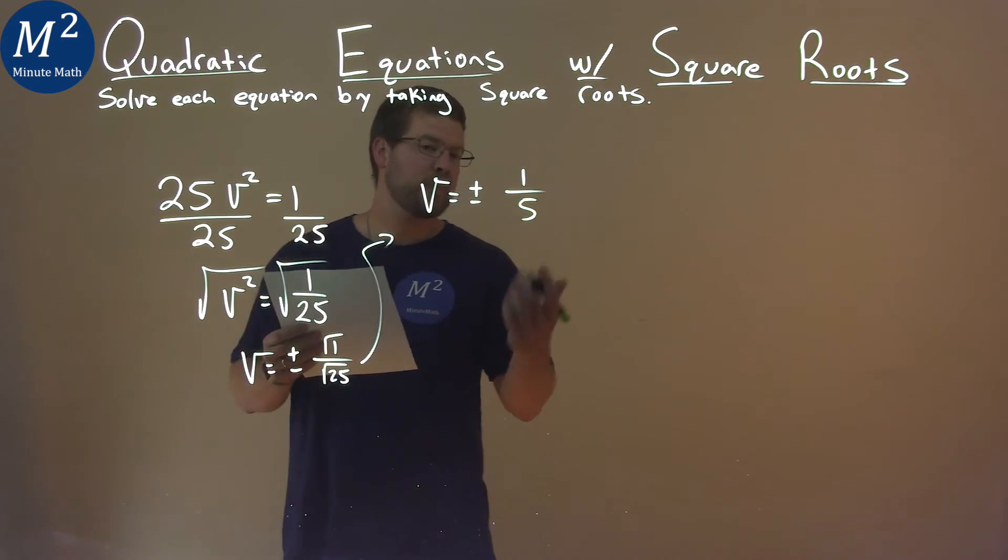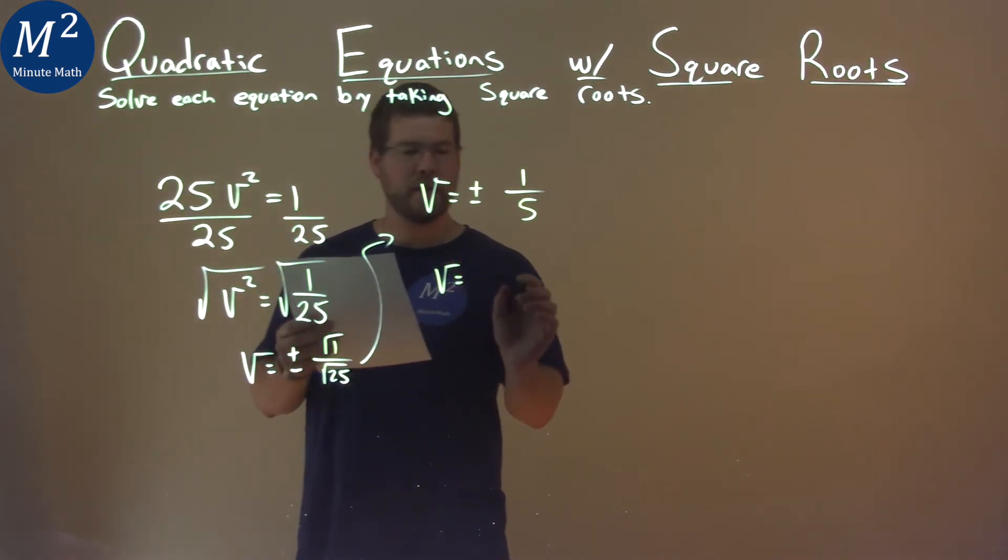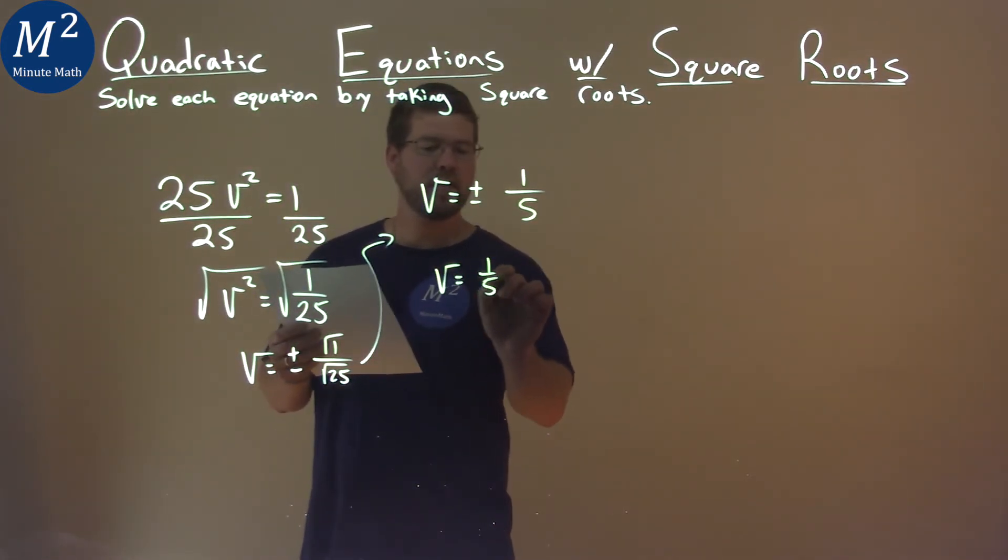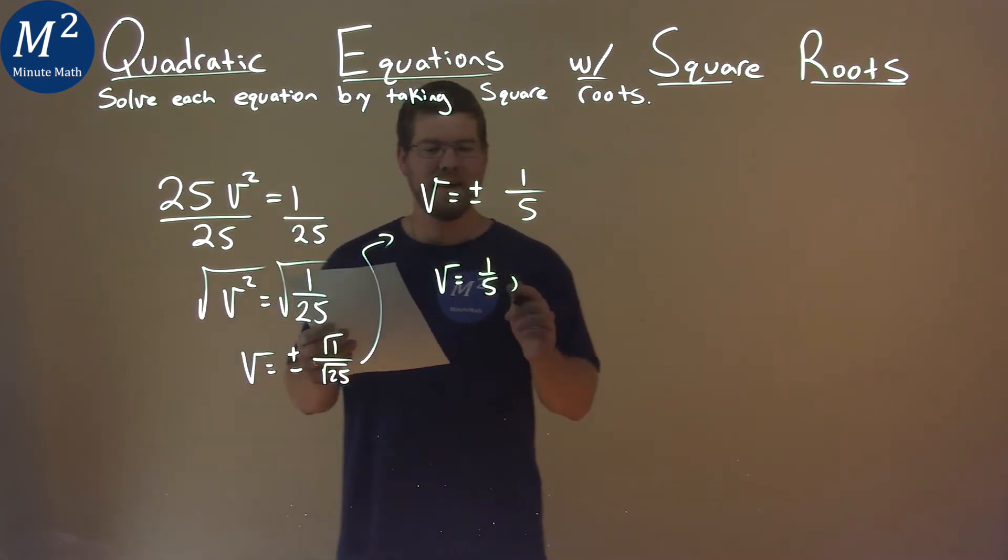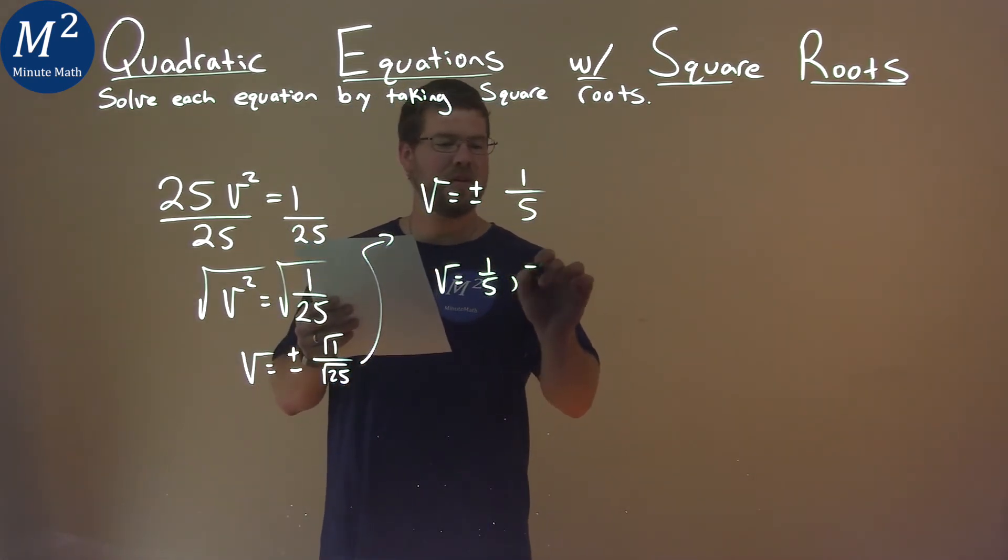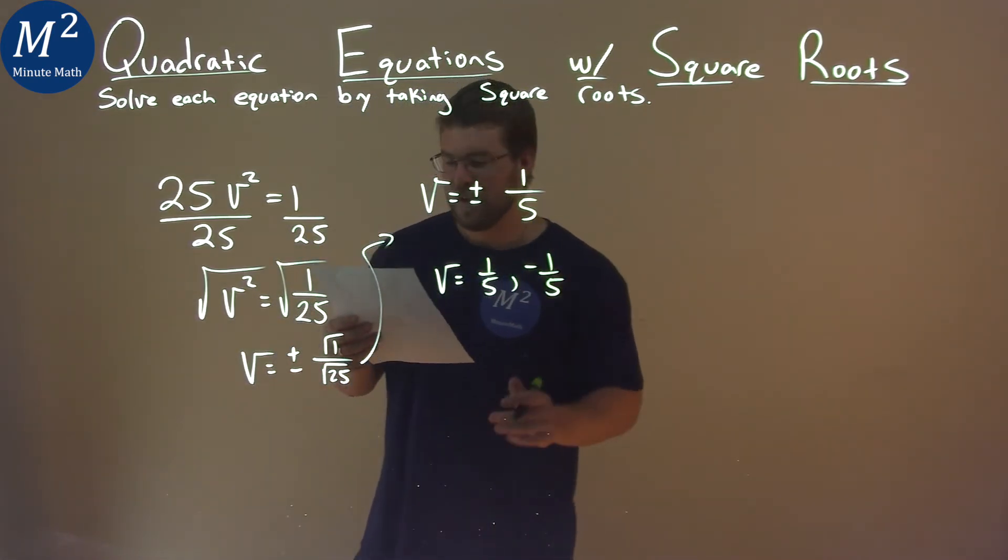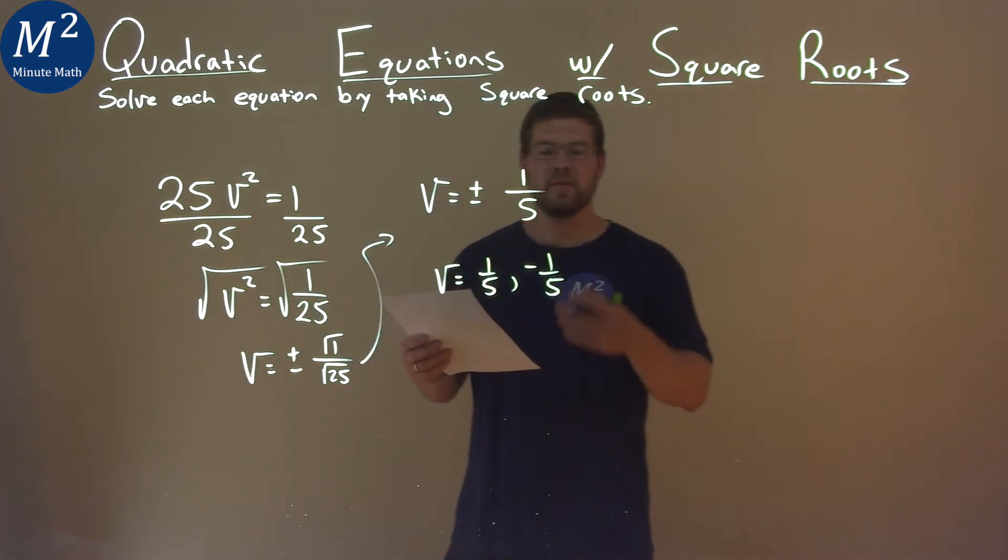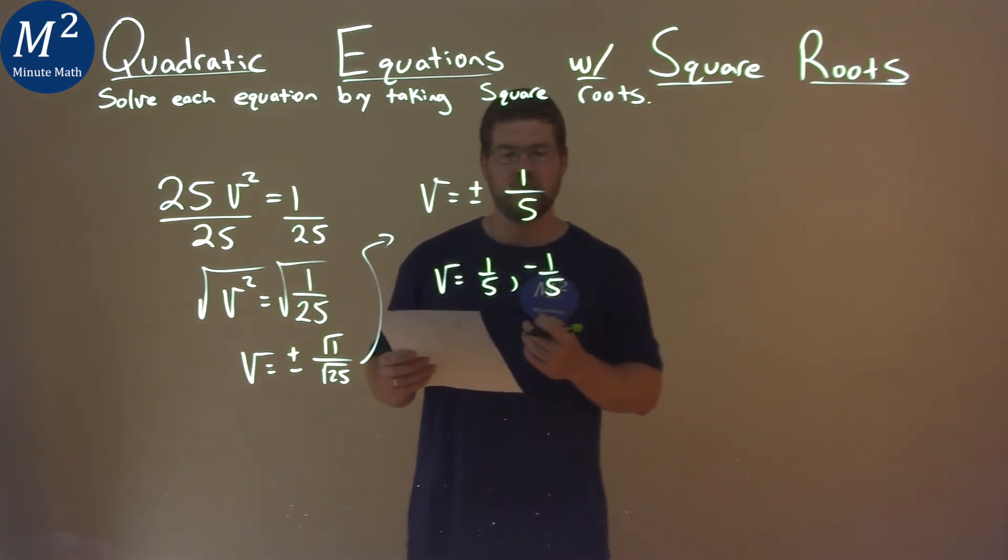And so we have v equals plus or minus 1 fifth. We can write it like this: v equals positive 1 fifth and v equals negative 1 fifth. That's our final answer.